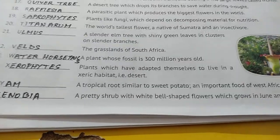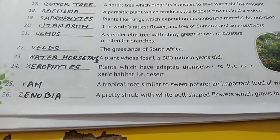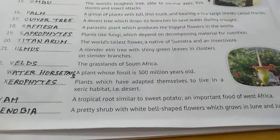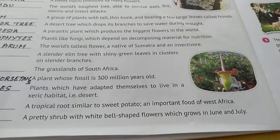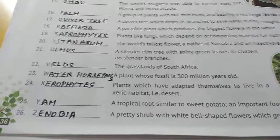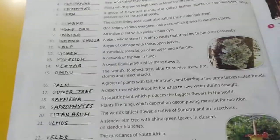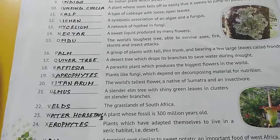Number twenty-six, the last one: a pretty shrub with white bell-shaped flowers which grows in June and July — ek bahut hi pyara sa shrub hota hai jo white bell-shaped flowers hote hain and that grows in June and July. They are called zenobia. So we are done with the chapter — all the blanks are filled. Do it and learn it properly. Thank you.